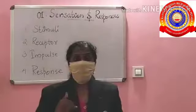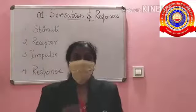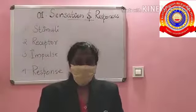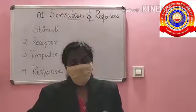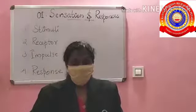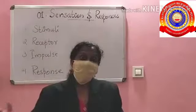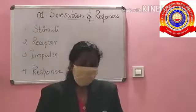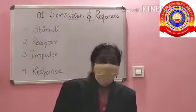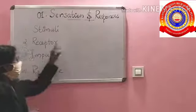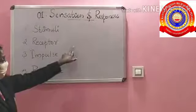The stimulus that takes place inside our body is called the internal stimulus — examples are hunger and thirst. The stimulus that takes place outside the body is called the external stimulus — examples are pain, hot, cold, etc. I think you understand these four things: stimulus, receptor, impulse, and response.